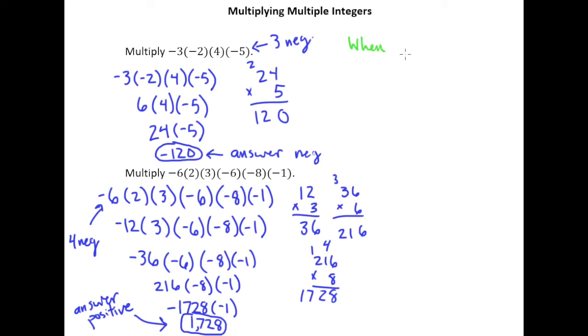So we can say it this way. When multiplying multiple integers, the answer will be negative if there are an odd number of negatives involved.